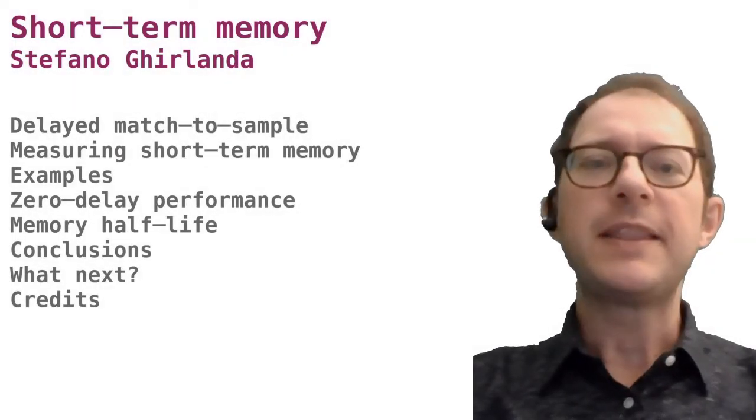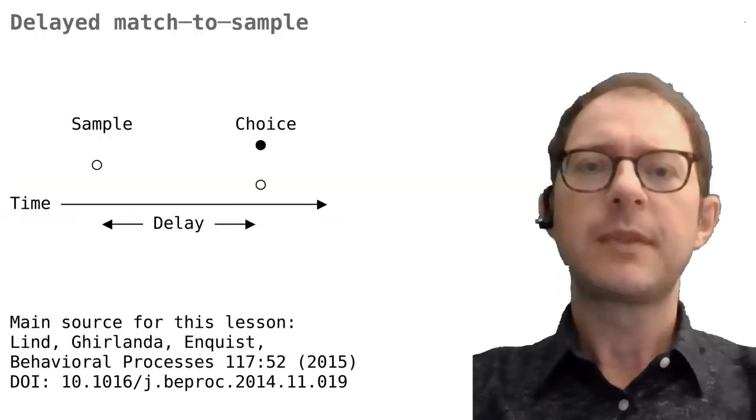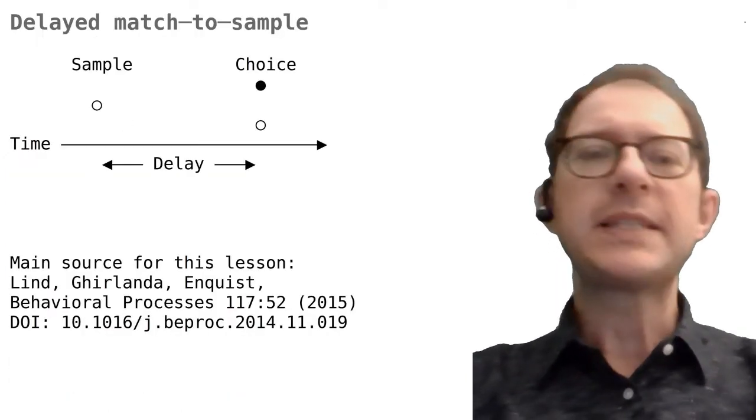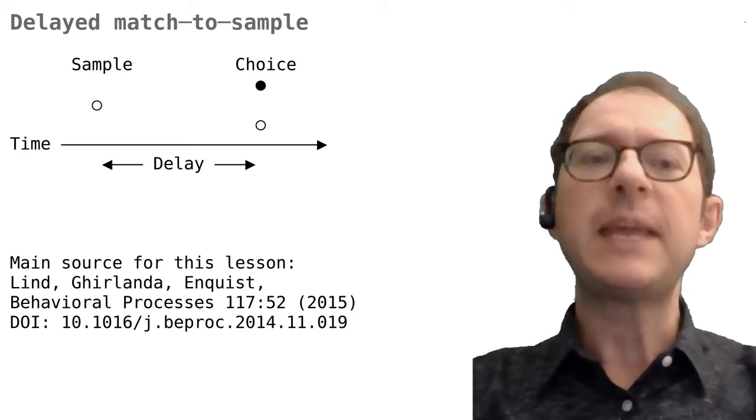Welcome back to our learning course. In this lesson we will talk about short-term memory in animals. We will look at the method to assess short-term memory called the delayed match-to-sample experiment, or DMTS for short.